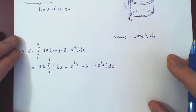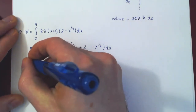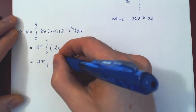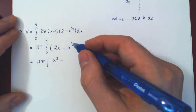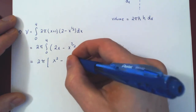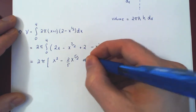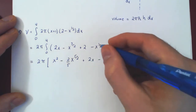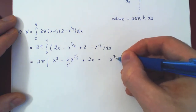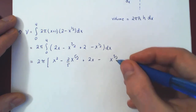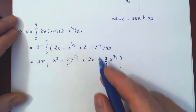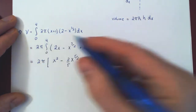There is no possible simplification, so now we use the fundamental theorem of calculus to find our antiderivative. Integrating 2x gives x squared. Minus: applying the power rule, add 1 to 3/2 to get 5/2, then divide by 5/2, which means multiplying by 2 over 5. Plus: the integral of 2 is 2x. Minus: applying the power rule, add 1 to 1/2 to get 3/2, divide by 3/2, multiply by the reciprocal 2/3. This is our antiderivative, evaluated as x goes from 0 to 4.